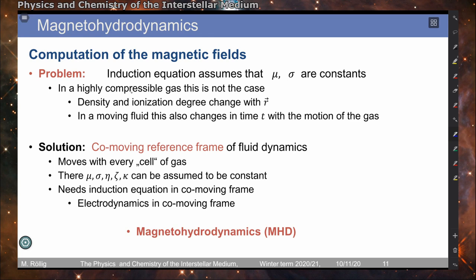To solve this problem, we move to a co-moving reference frame for fluid dynamics, in which we move with every cell of the fluid. In such a co-moving frame, all our material constants can be assumed to be really constant in time. This requires transforming our induction equation into the co-moving frame — we are looking at electrodynamics in a co-moving frame — and this gives rise to magnetohydrodynamics.